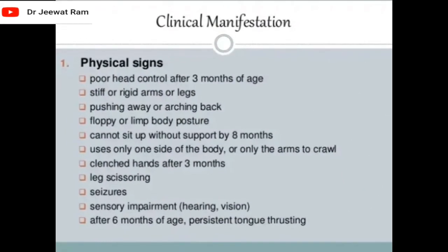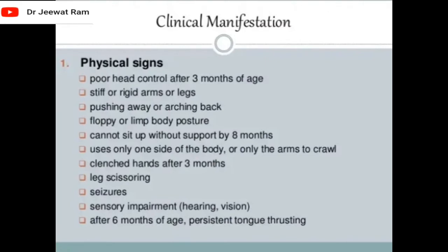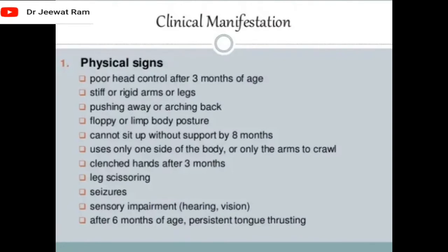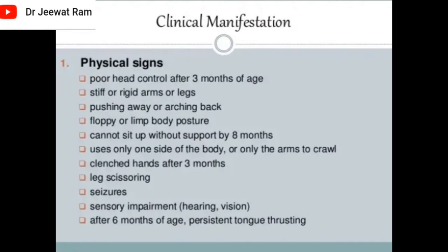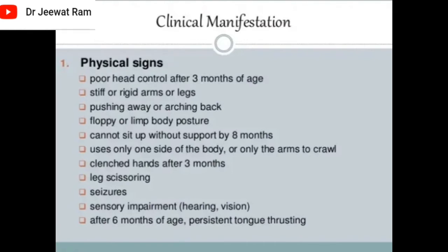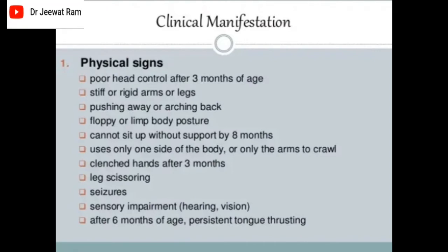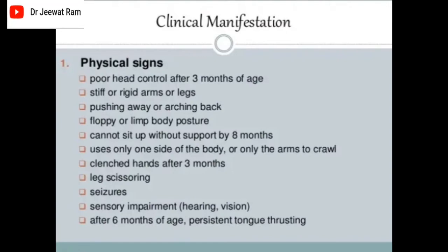Clinical manifestations — physical signs include poor head control after three months of age, stiff or rigid arms or legs, pushing away or arching back, floppy or limp body posture, inability to sit up without support by eight months, using only one side of the body or only the arms to crawl, clenched hands after three months, leg scissoring, sensory impairment involving hearing and vision, and after six months of age, persistent tongue thrusting.